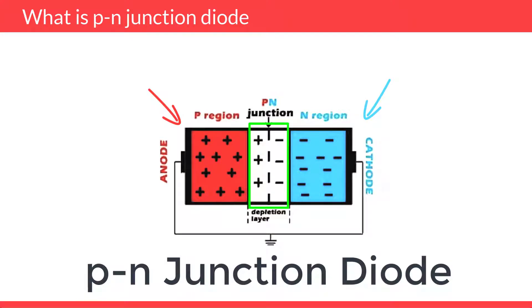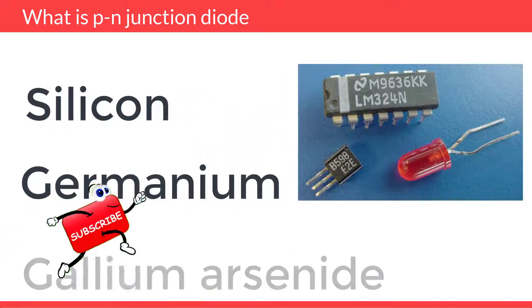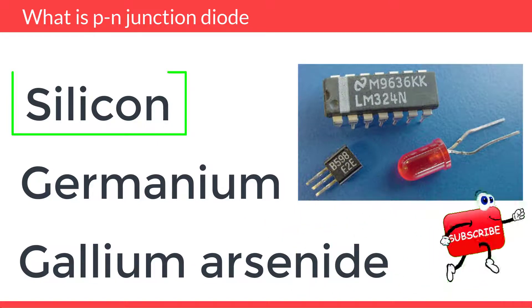The PN Junction Diode is made from semiconductor materials such as silicon, germanium, and gallium arsenide. For designing diodes, silicon is more preferred over germanium.